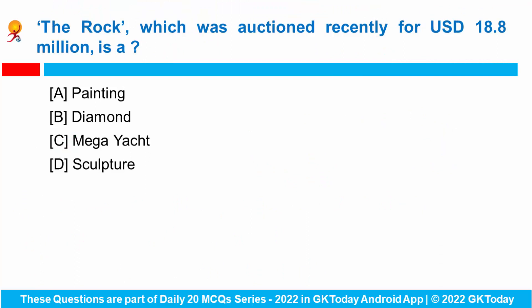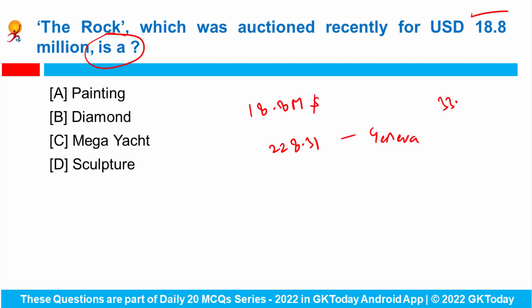The Rock, which was auctioned recently for 18.8 million dollars, is the biggest white diamond ever auctioned. This 228.31-carat stone, larger than a golf ball, was sold in Geneva. There was a high hope that this rock would break the world record for a white diamond, which stands at 33.7 million dollars. The large diamond was extracted from a mine in South Africa in the early 2000s and had been displayed in Dubai, Taipei and New York before its sale in Geneva.